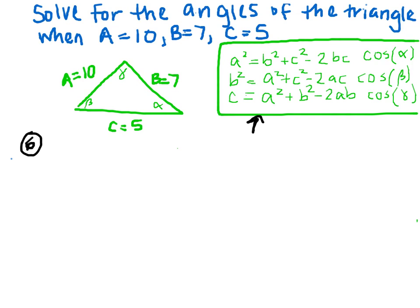So we're going to start with finding alpha. We need to plug in A for A, B for B, and C for C into the first equation. So we have 10 squared equals 7 squared plus 5 squared minus 2 times our B. Our B is 7, and then times C, which is 5, all that times cosine of alpha.